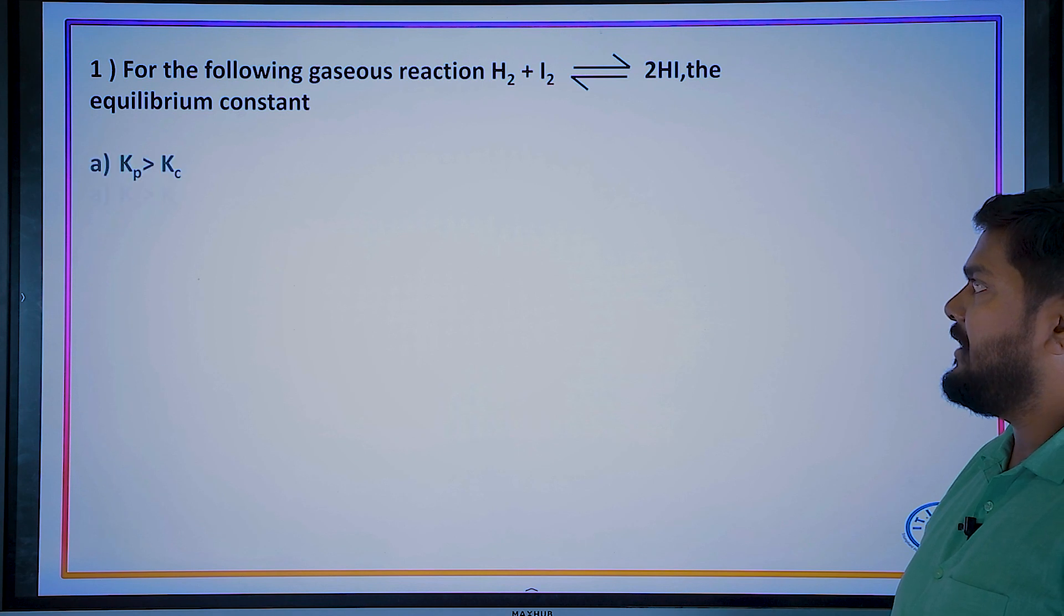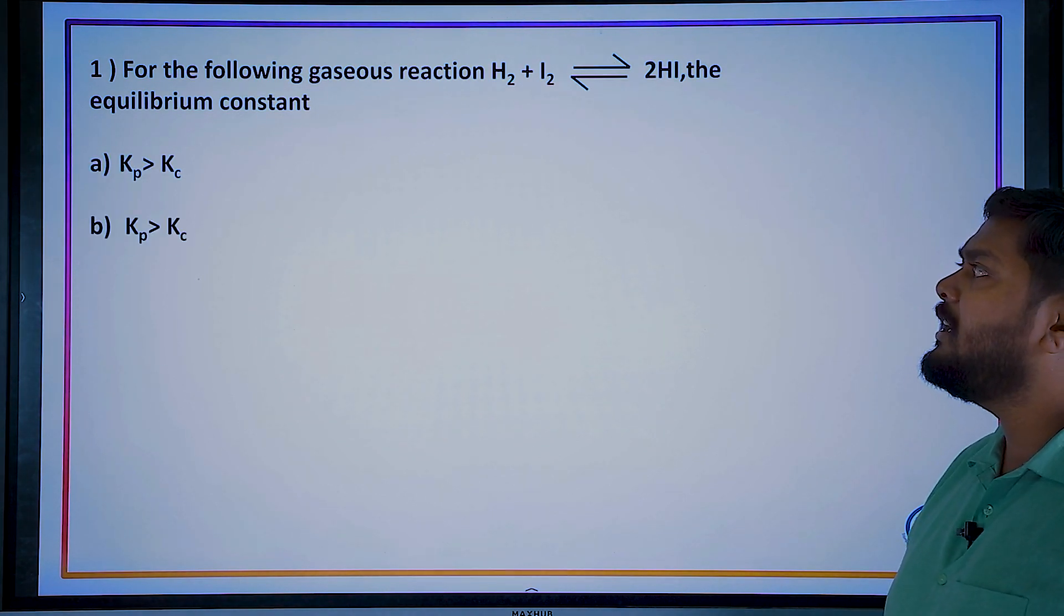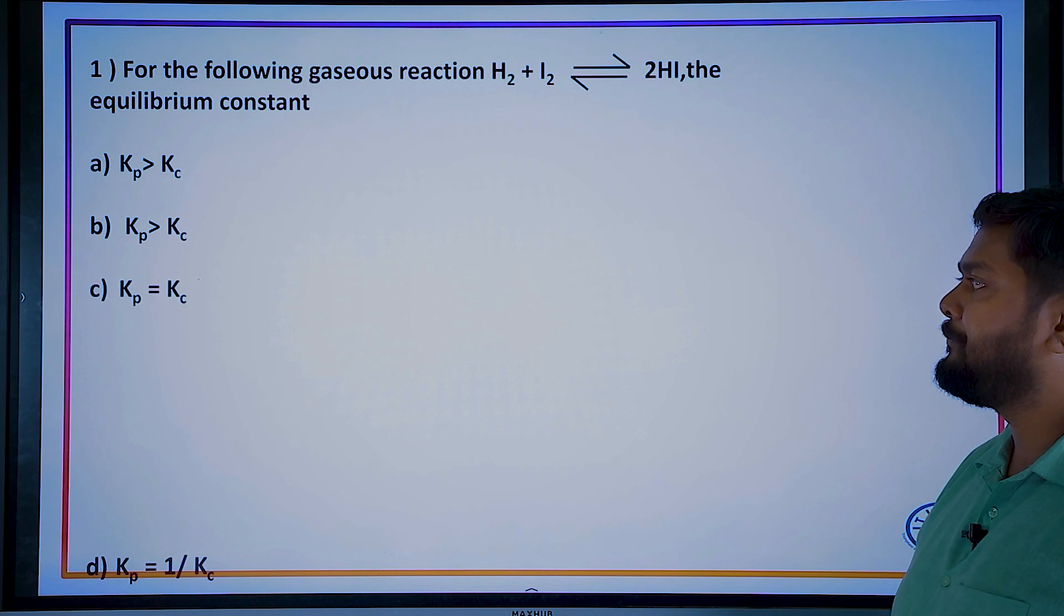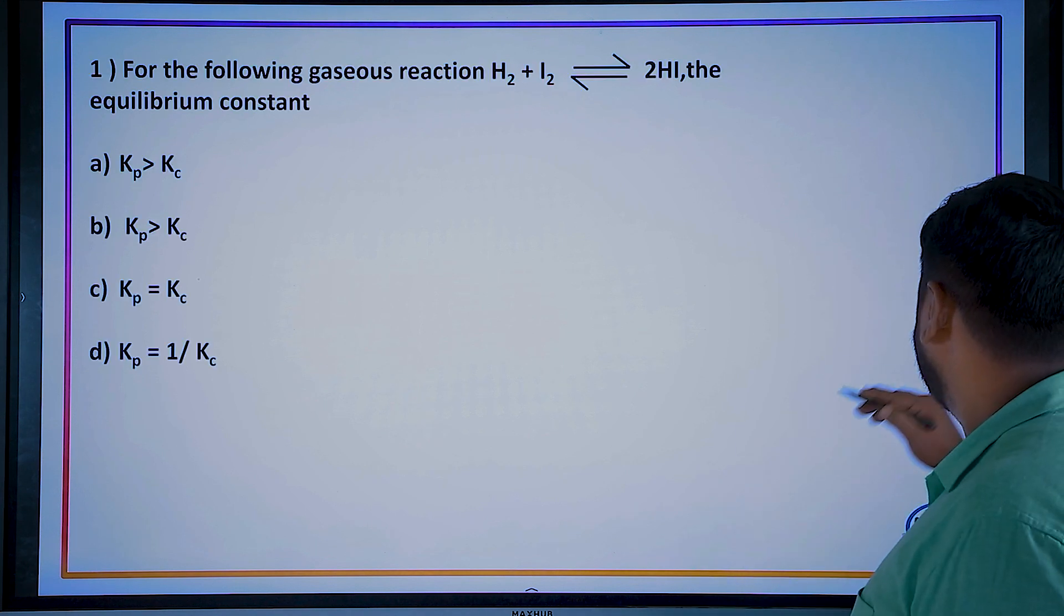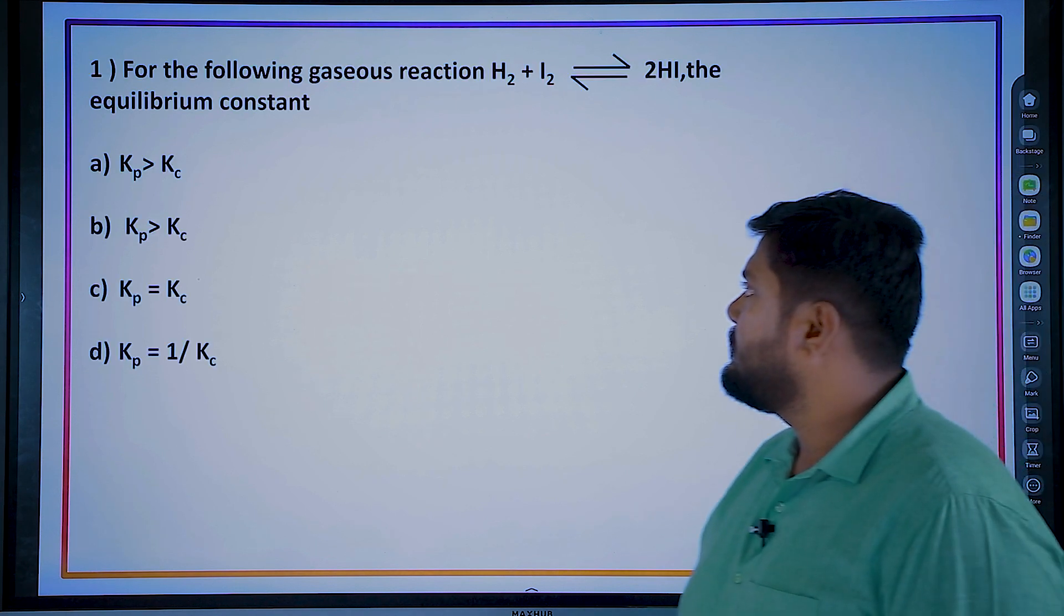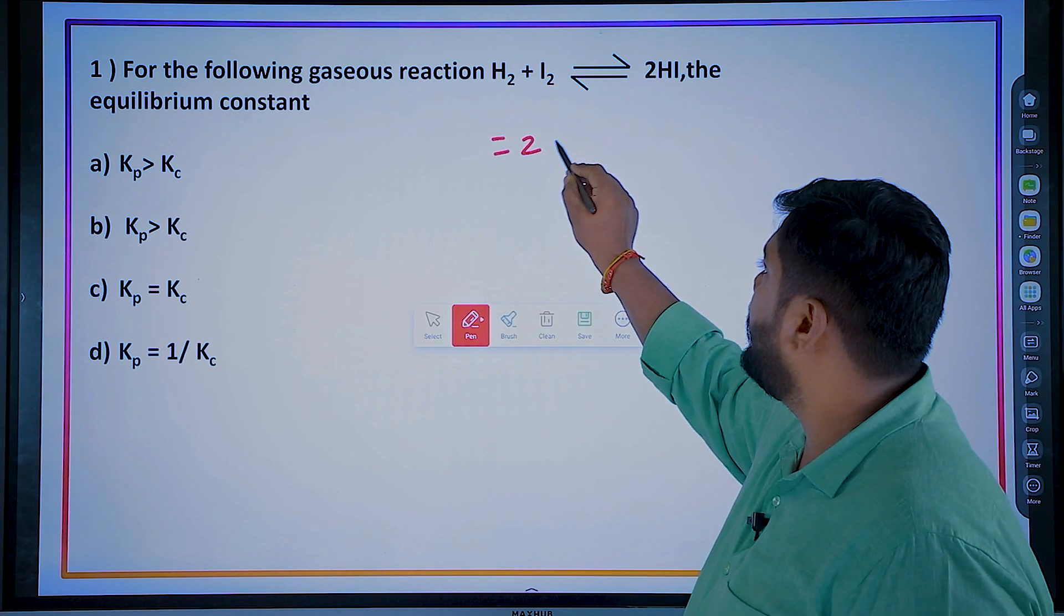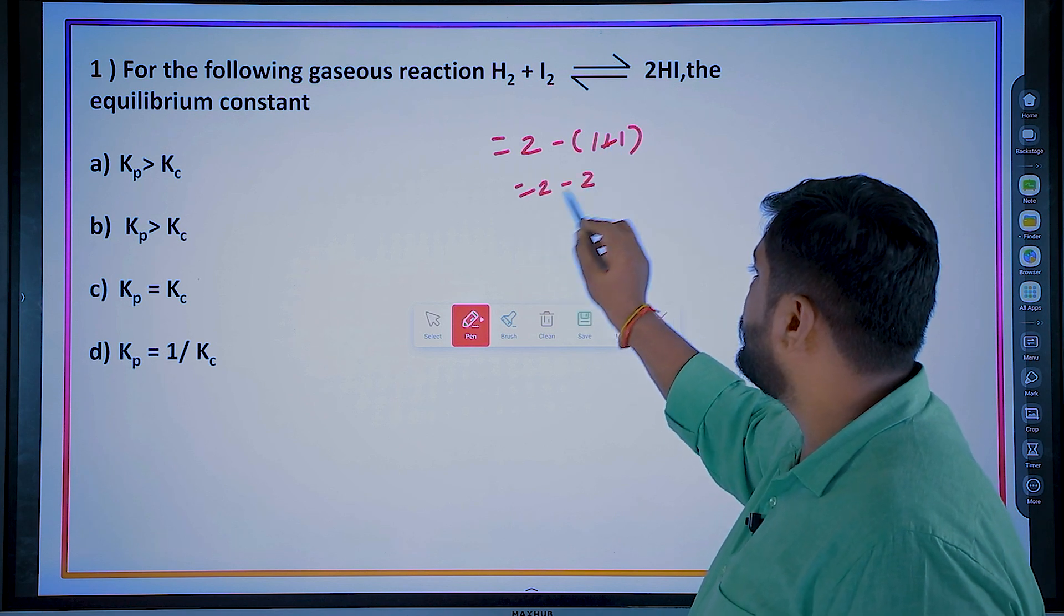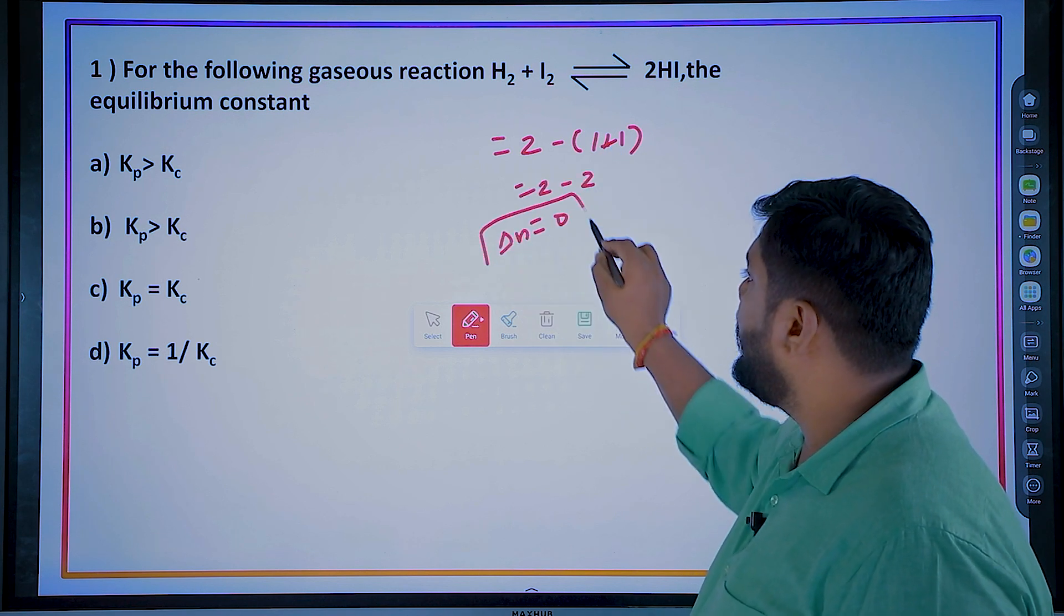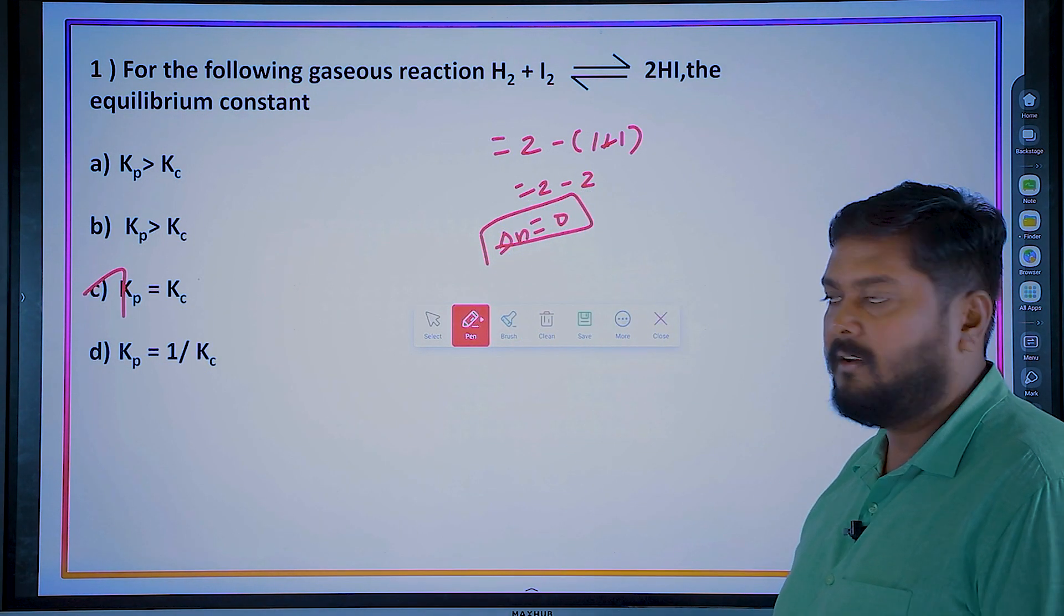For the following gaseous reaction: H2 and I2 react to form 2HI. The equilibrium constant will be in what? What is your delta n? Product will be 2 and reactant will be 1 plus 1, that is 2 minus 2. Delta n is zero. When delta n is zero, Kp will be equal to Kc.